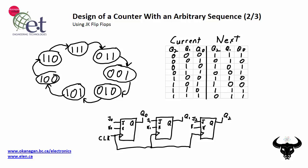Hi, Dave Williams again, and this is part two of how to design an arbitrary sequence counter using JK flip-flops. In the first part, what we did is we came up with a state transition diagram, which is just defining how our system moves from state to state, and translated that into the state transition table.